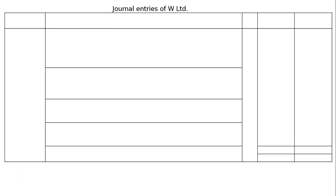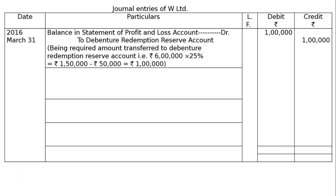The question is: on 31st March 2016, W Limited had the following balances in its books, and the last line is to pass necessary journal entries in the books of the company. We have to draw the journal form with date, particulars, ledger folio, debit and credit with rupee symbols. The year is 2016, 31st March.